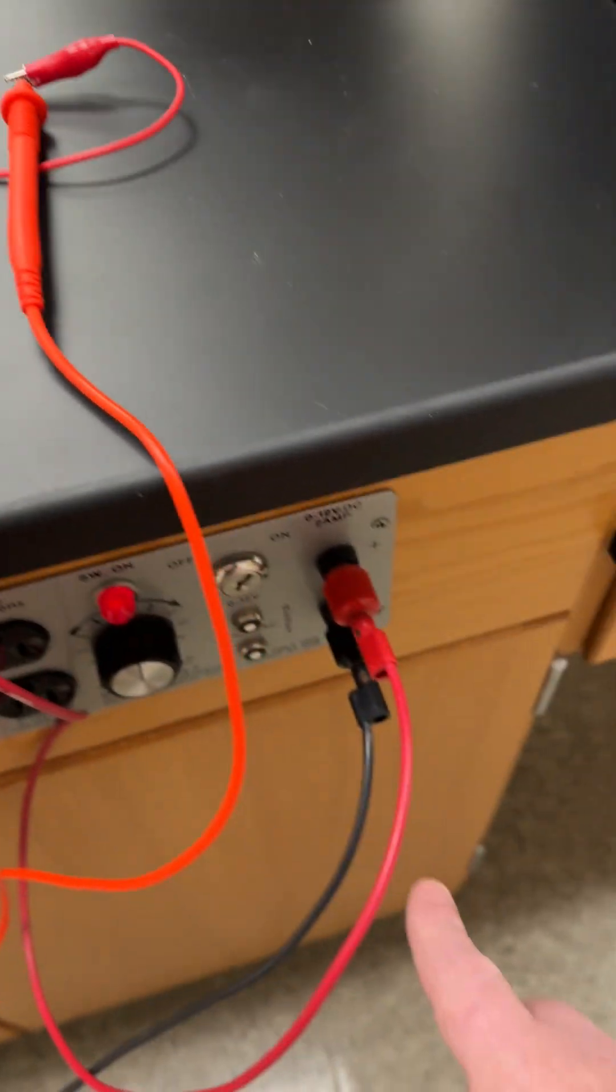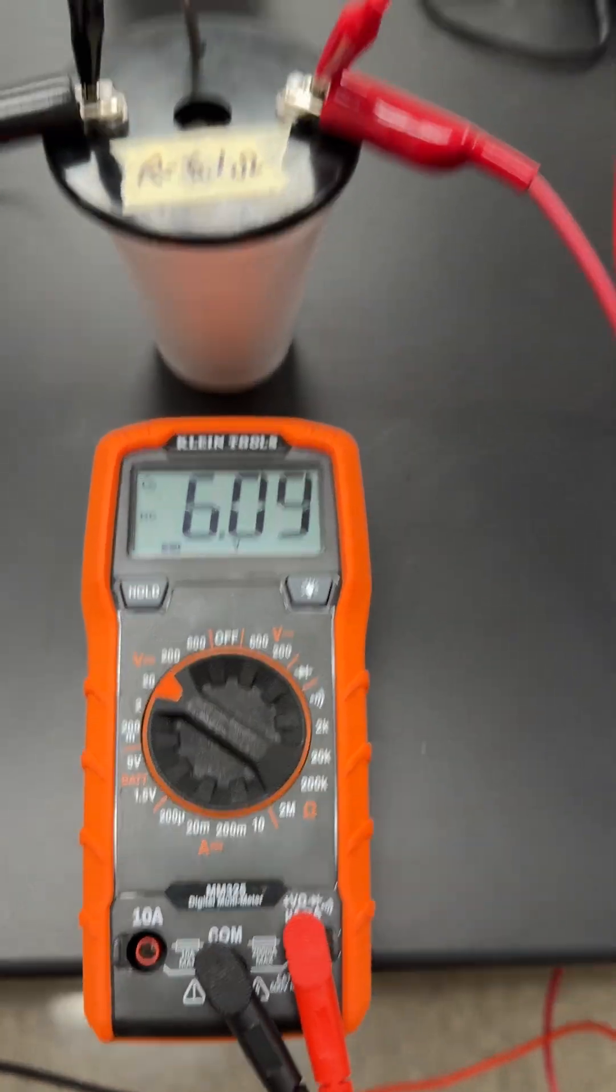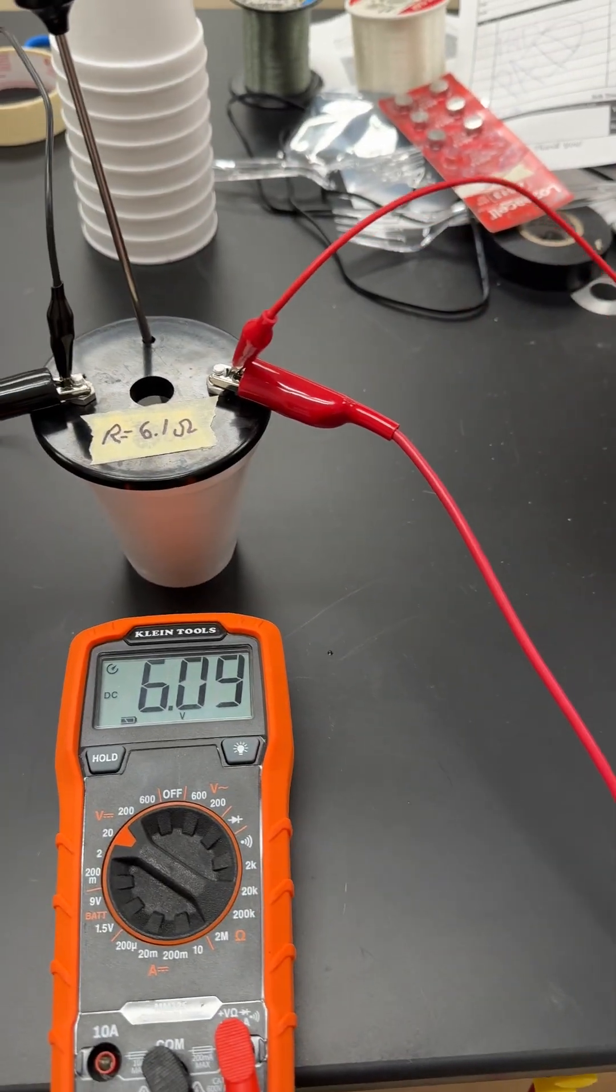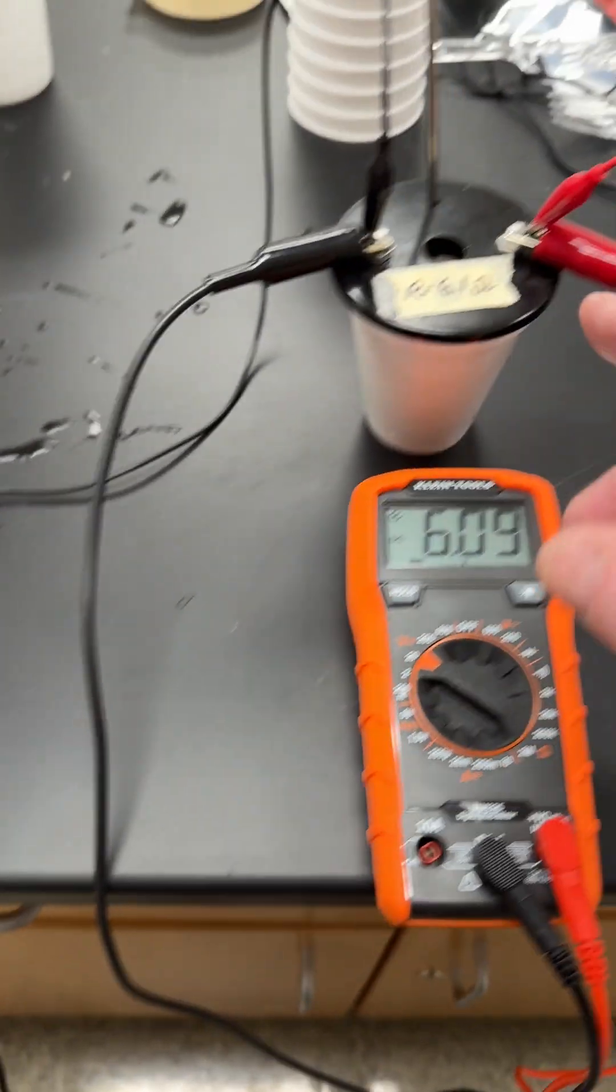going around back to the table. And then we have just a voltmeter, set on the 20 volt scale, hooked up to the positive and to the negative side.